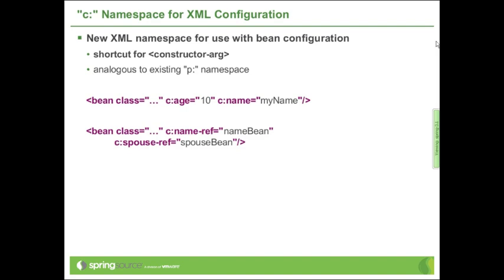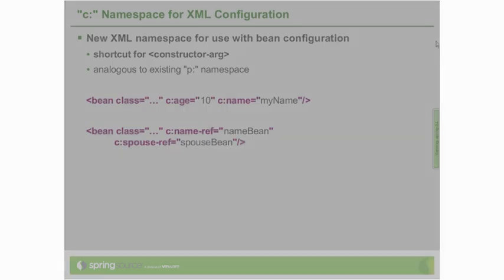You will notice that we are using named constructor arguments. That is actually the reason why historically we only did this for properties with the P-namespace — because constructor arguments in the Java language have a name, but in the actual class file there is no immediate representation of constructor argument names. Spring, in recent versions, is now capable of taking those names into account by parsing class files with ASM, using the debug information that class files often contain. So as long as you compile your classes with debug symbols included, Spring will be able to resolve such configuration against the constructor argument names from your source code, as you would expect. It works in 99% of cases as long as you compile with debug symbols.